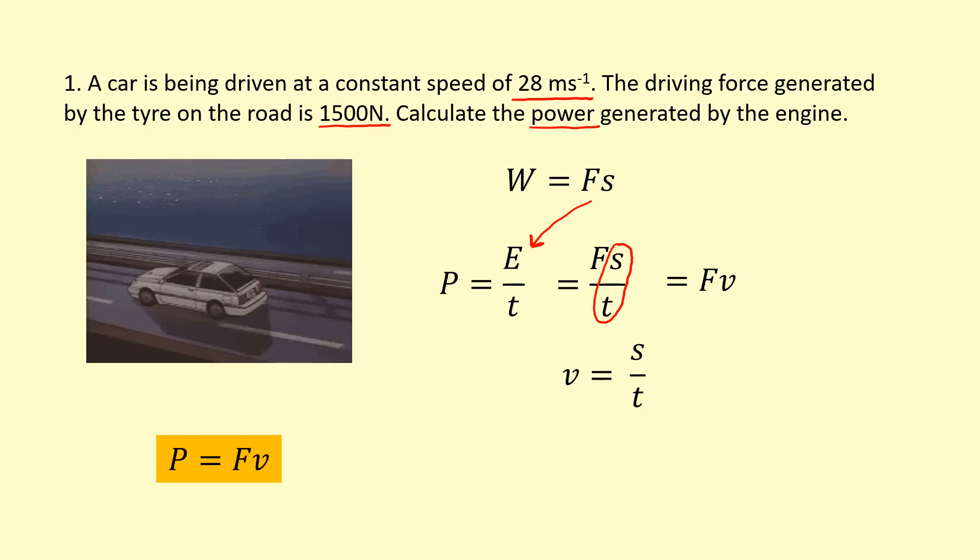So in this particular question, F is 1500 and v is 28. That gives me 42,000 watts. So 42,000 joules of energy is being transferred by the car in this particular case.